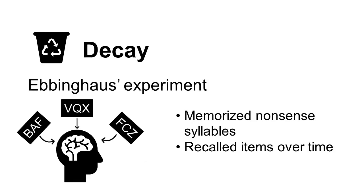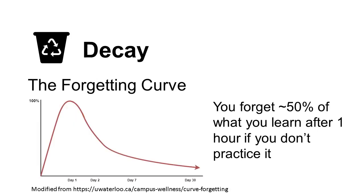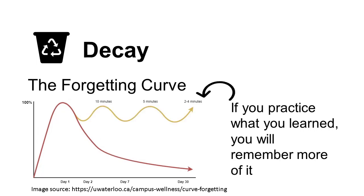Sometimes memories just fade with time. This process is called decay. In 1885, a scientist named Ebbinghaus published a paper about how long our memories last. In the experiment, he made himself memorize a bunch of nonsense syllables and then recall them over time. Ebbinghaus created what we call the forgetting curve, concluding that we forget things quite quickly after learning them. However, it's important to note that this curve shows what happens to information you don't rehearse after learning it. Time may have an impact on forgetting, but really, you need to use the learning or lose it.